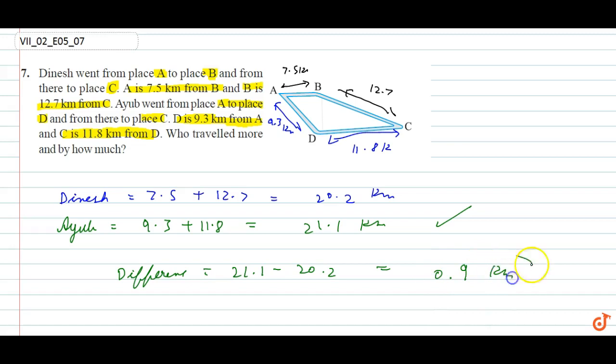So kitna chala? 0.9 km zyadha chala Ayub ne Dinesh se. Ayub traveled 0.9 km more than Dinesh.